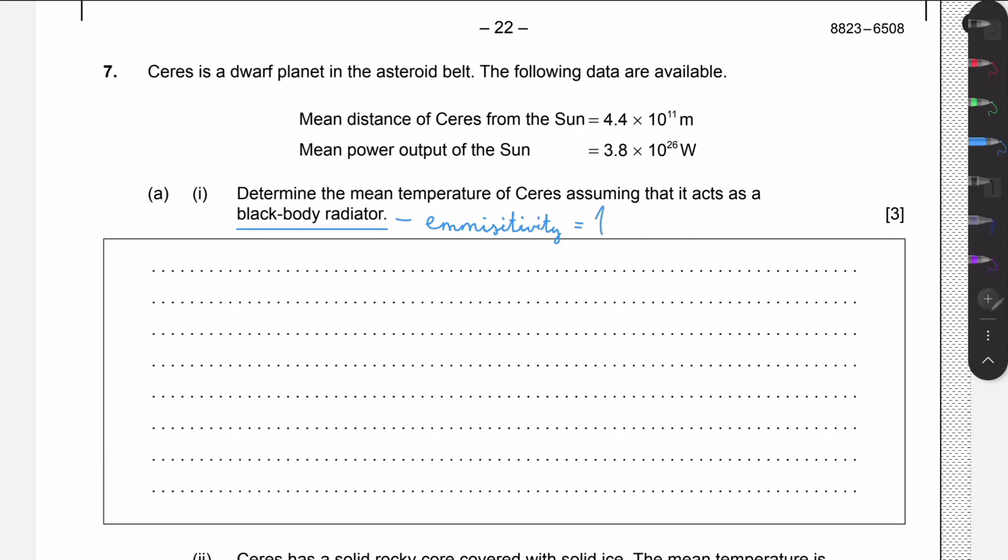If something is perfectly black then it has an emissivity of one. So all the radiation that it emits or absorbs is 100%. If there's 10 watts incident on the surface, then 10 watts will be used to increase the temperature of it.